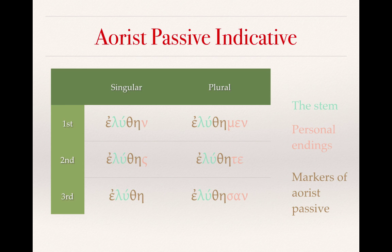Eleuthase: you singular were loosened. Eleuthe: he, she, or it was loosened. Eleuthamen: we were loosened. Eleuthate: y'all were loosened. Eleuthasan: they were loosened. And there is an aorist passive infinitive, leuthanai, which we would translate in most cases simply as 'to be loosened.'